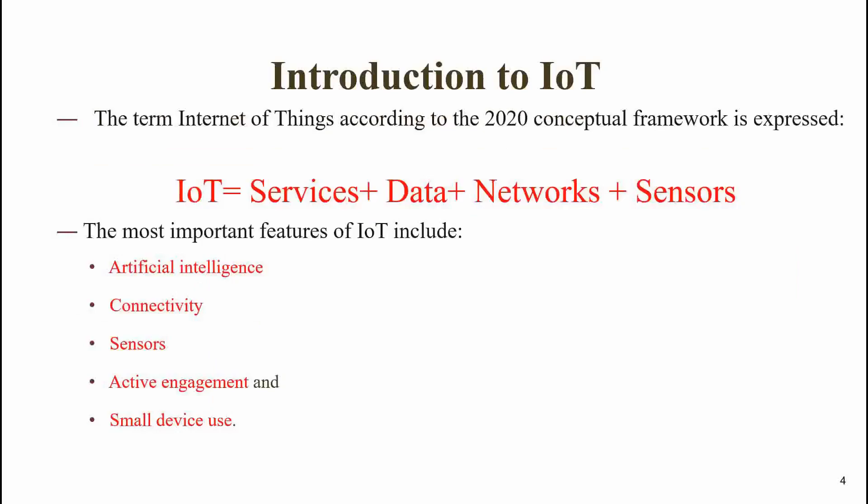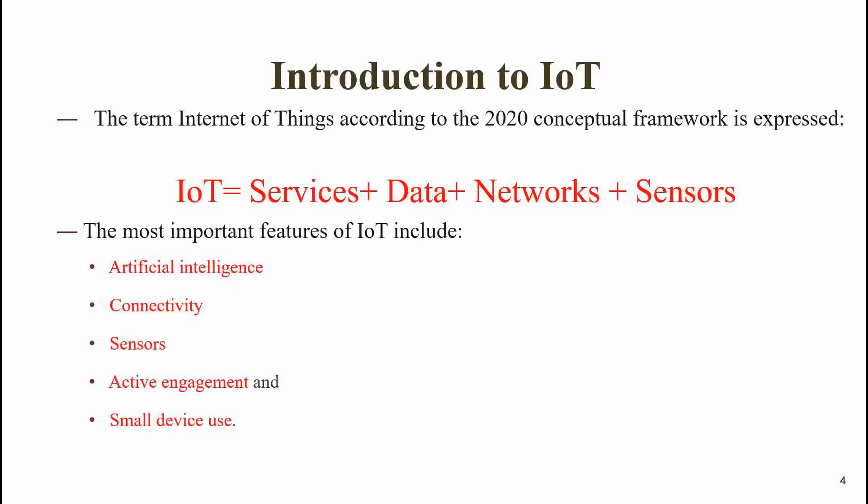Now, the term Internet of Things according to the 2020 conceptual framework: IoT equals services plus data plus network plus sensors. Services include different areas like office, transport, and education services.